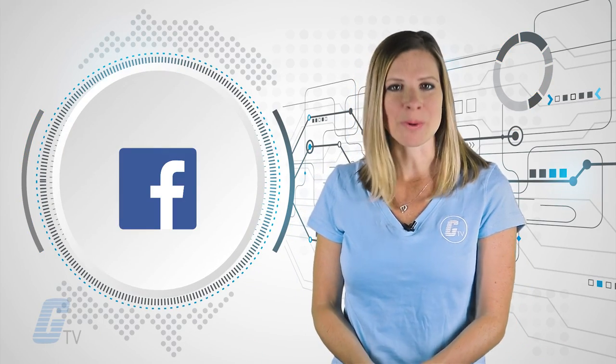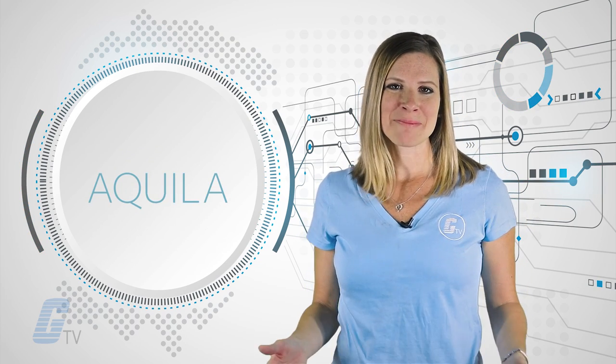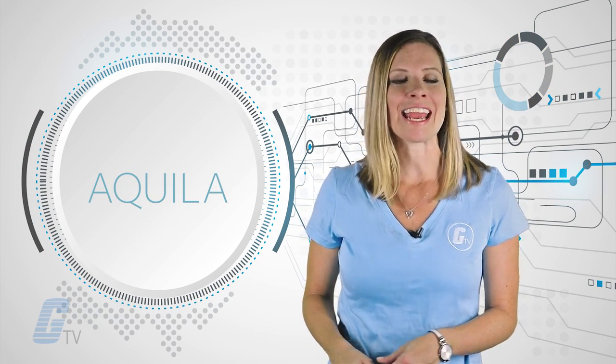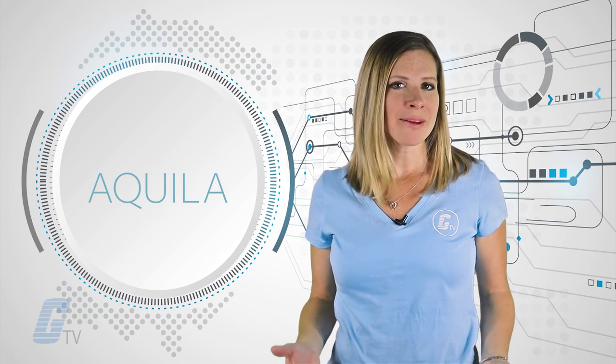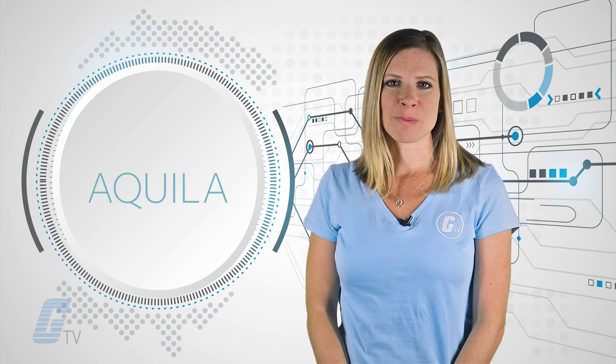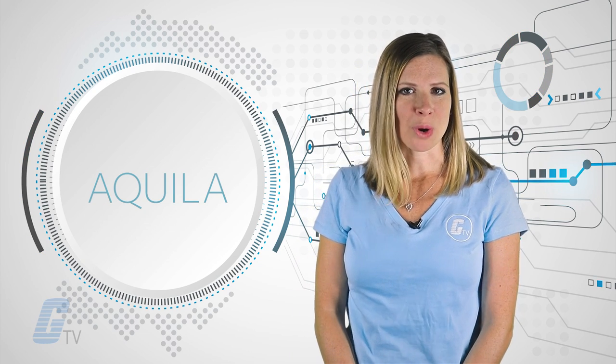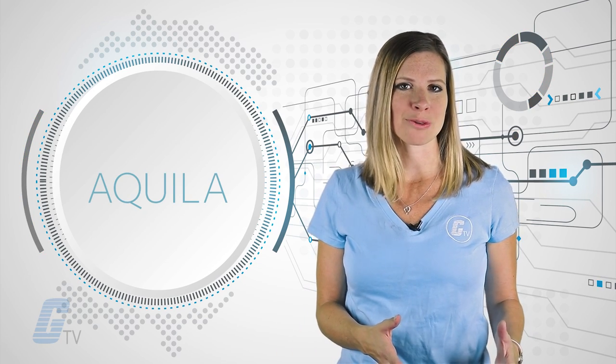In another bit of solar-powered flight news, Facebook recently announced that its Aquila aircraft completed its first test flight in Arizona. Aquila is a high-altitude, unmanned aircraft powered by solar energy. Facebook plans to use Aquila drones to bring affordable internet to hard-to-reach places across the globe.